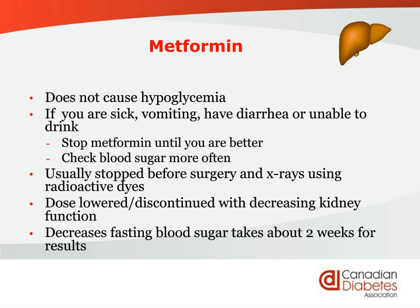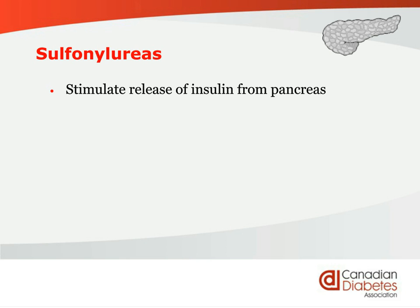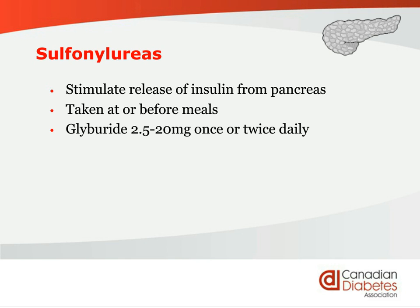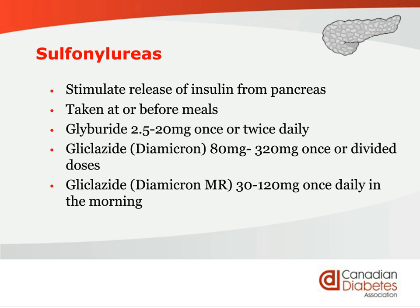The next class of medications is called sulfonylureas — they work in the pancreas. It's like squeezing a sponge: the sulfonylurea drugs stimulate the release of insulin from the pancreas. They should be taken at or just before a meal. Glyburide is one of the most common, at 2.5 to 20 mg once or twice daily. Gliclazide, also known as Diamicron, comes in a regular tablet up to 320 mg once a day or divided, and has a long-acting form at 30 to 120 mg once a day in the morning. There's also glimepiride, also called Amaril, dosed once a day at 1 to 8 mg.